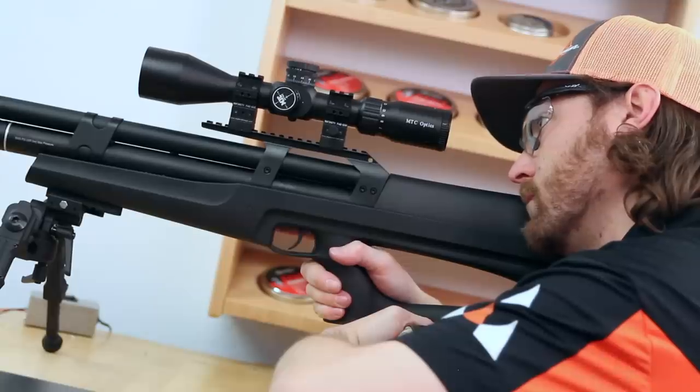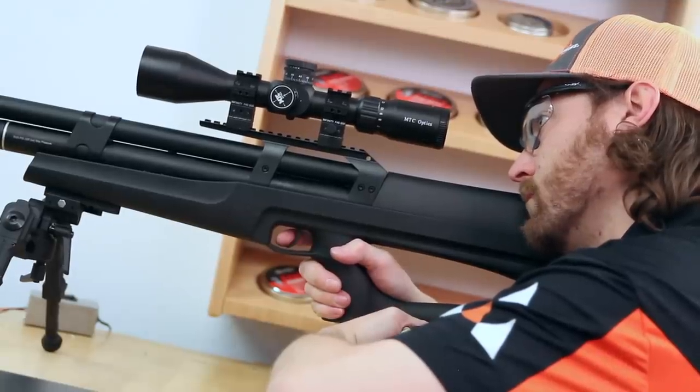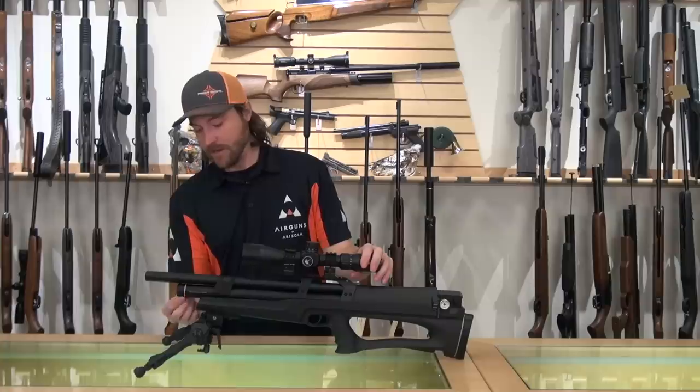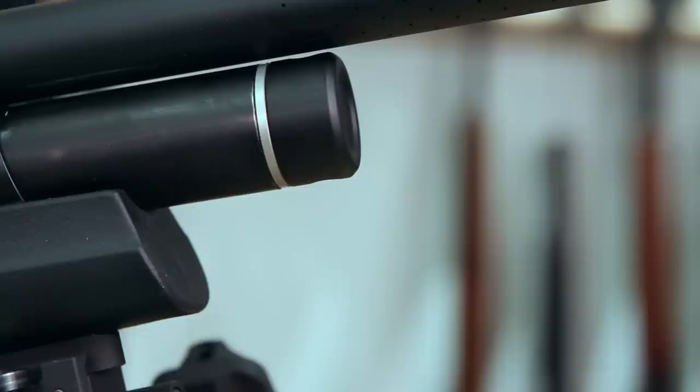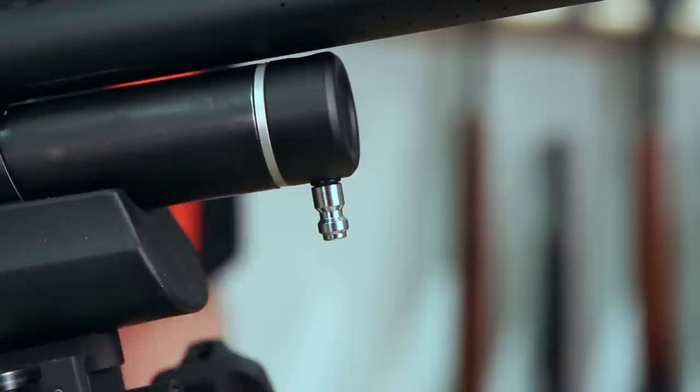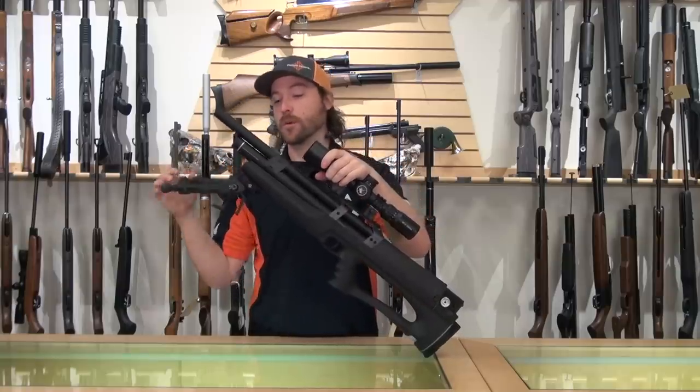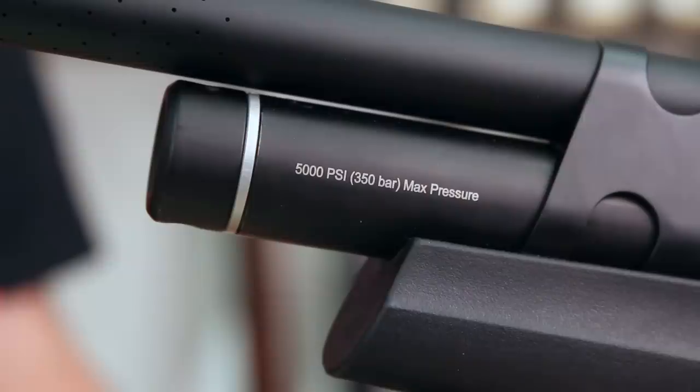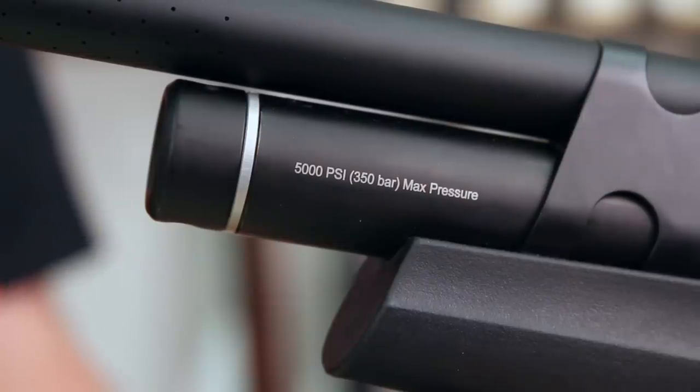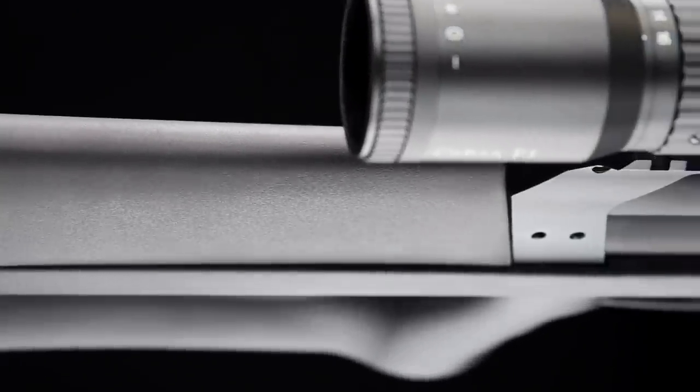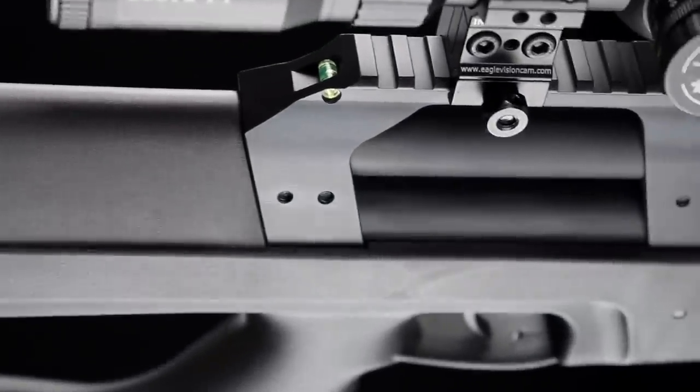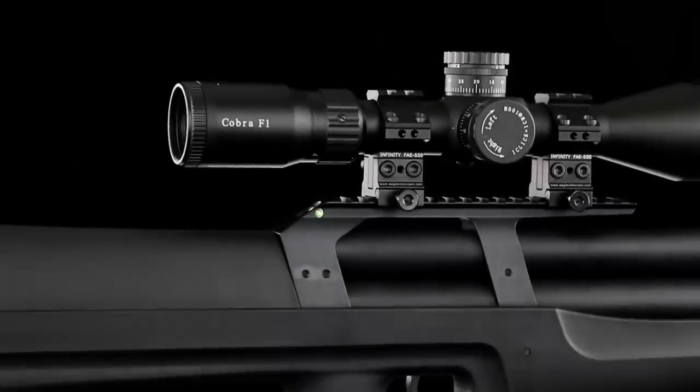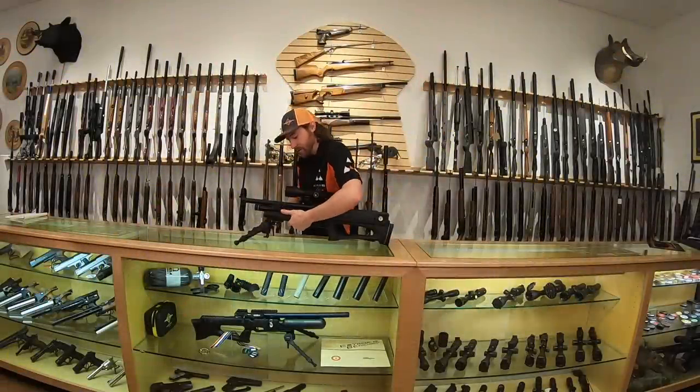Underneath the shrouded barrel here, you have the quick fill port. The gun comes with the fill probe that goes right on the end of the cylinder here. This gun has a 350 bar fill max, so if you have the ability to get 350 bar, that's 5,000 PSI. The gun can hold it and can give you a lot of shots accordingly. It'll operate at anything above reg pressure, so as long as you have 200-250 bar, you can get some shots out of it. The number of shots you get per fill will directly correlate with what you have the power set at with the reg and everything like that.